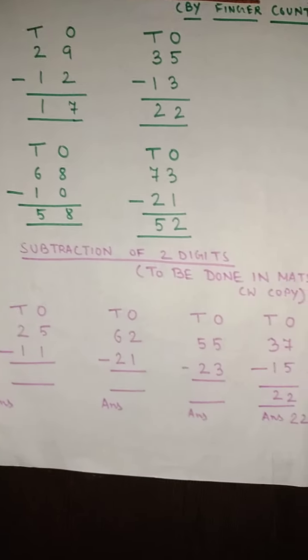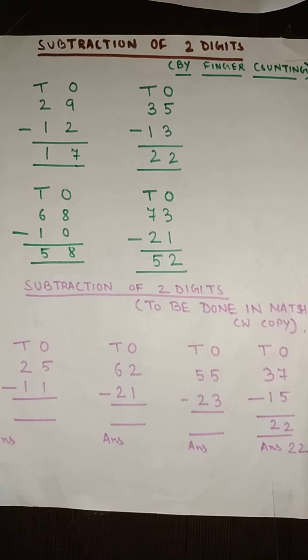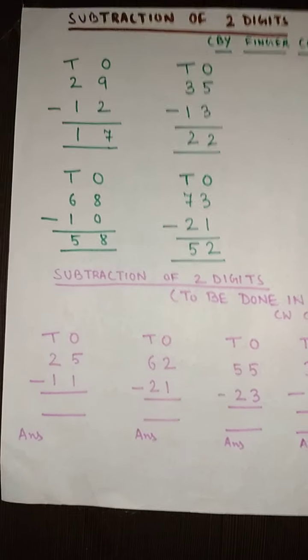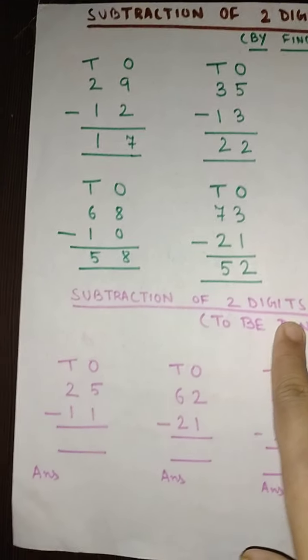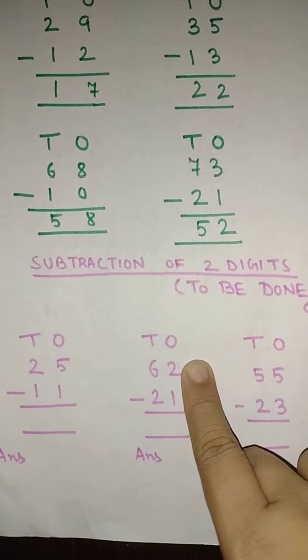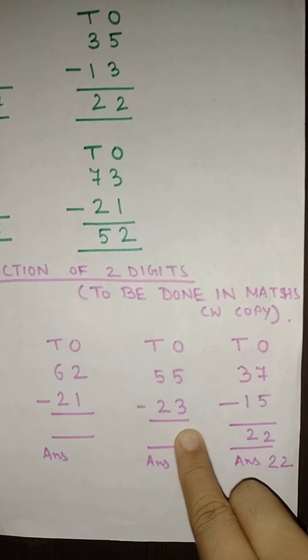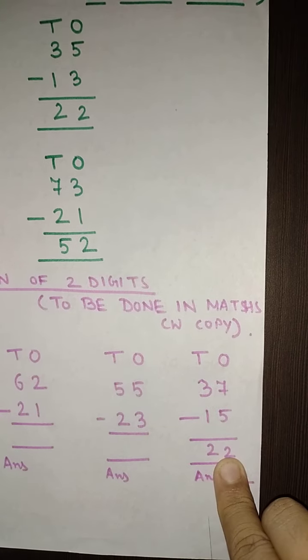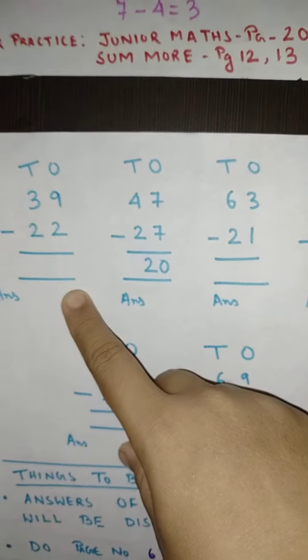Now after this students you will be taking out your math CW copy. And in a fresh page you will be doing these sums. Now we will give the heading subtraction and then subtraction of 2 digits. Number 1 is 25 minus 11. Next one is 62 minus 21, 55 minus 23, 37 minus 15.